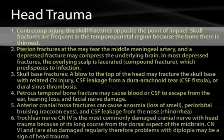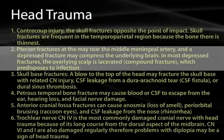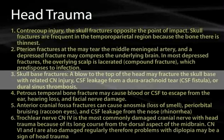Let's consider some potential head traumas tested on the USMLE. Contrecoup injuries are skull fractures opposite the point of initial impact — an impact to the frontal skull can produce occipital changes, including visual effects. Pterion fractures can tear the middle meningeal artery, and depressed fractures can compress the underlying brain. Scalp lacerations can allow infections to travel into the cranial vault, potentially leading to meningitis via emissary veins carrying infection into the skull.